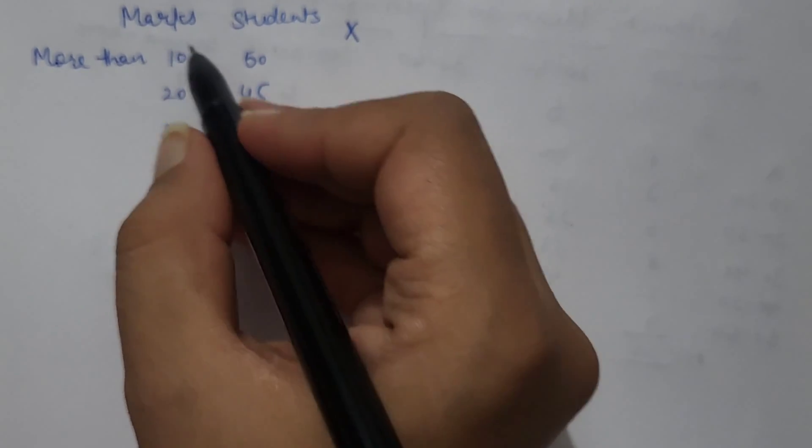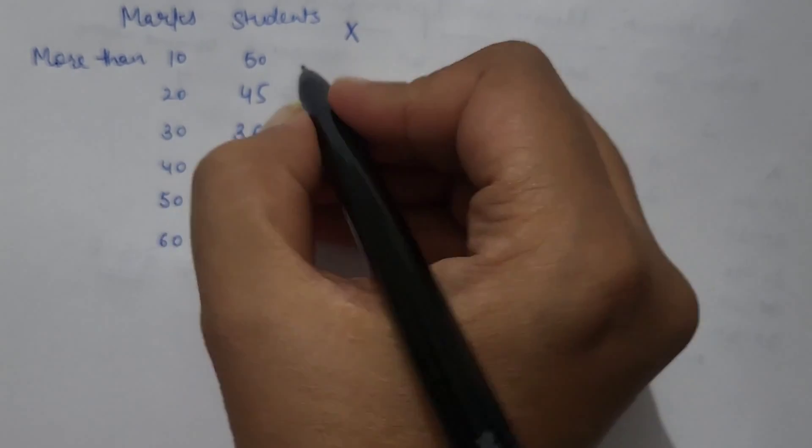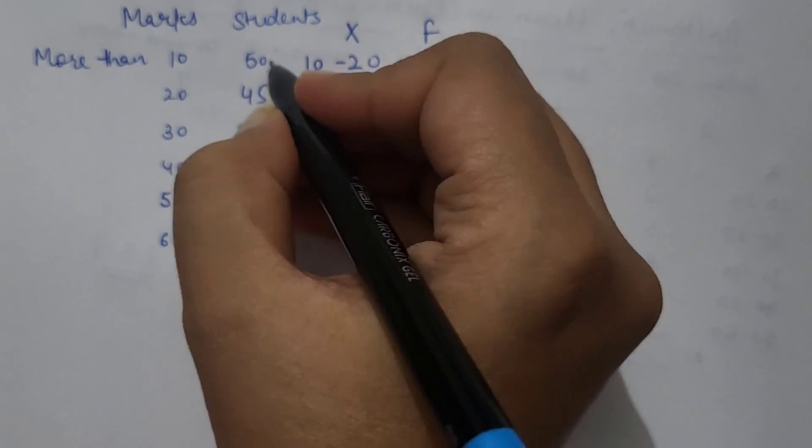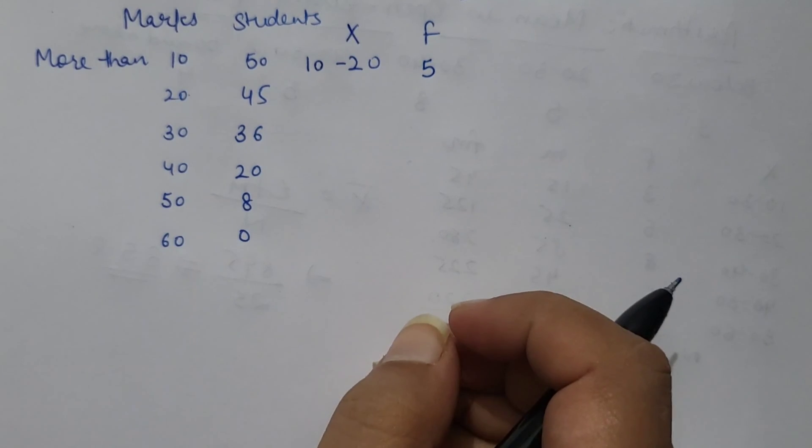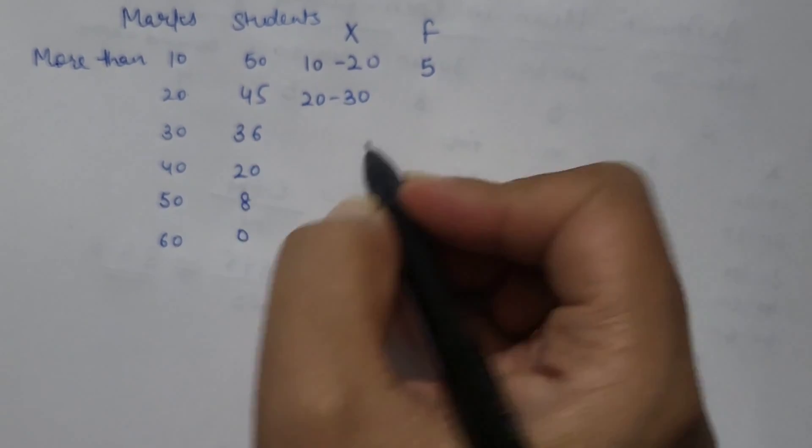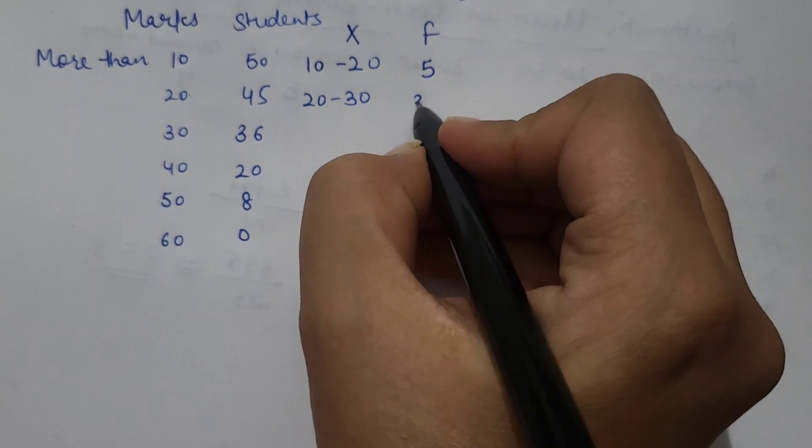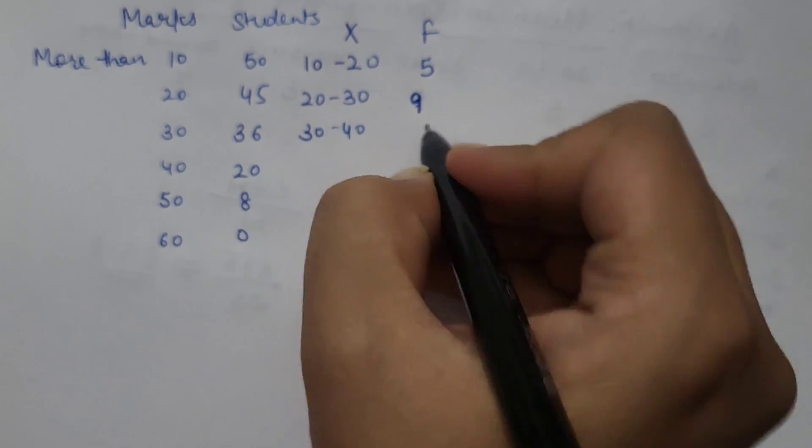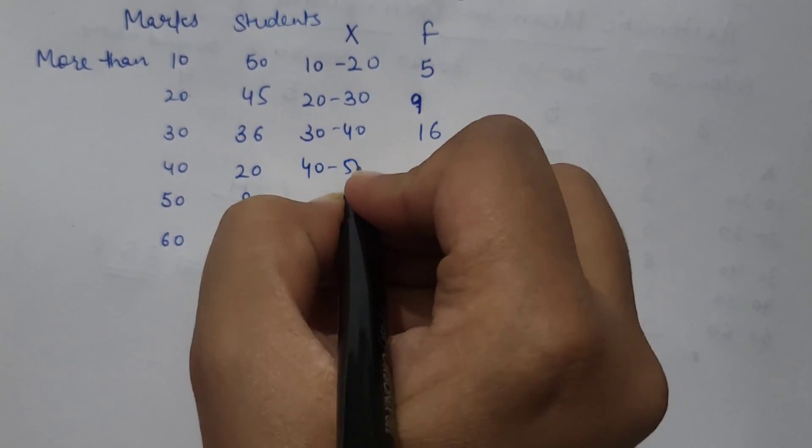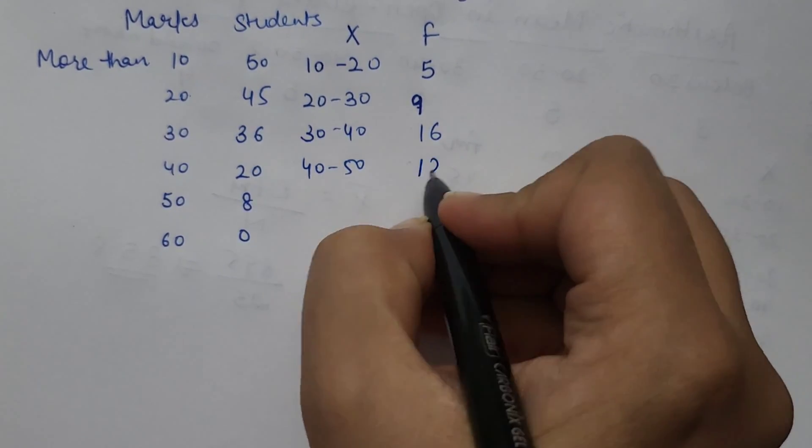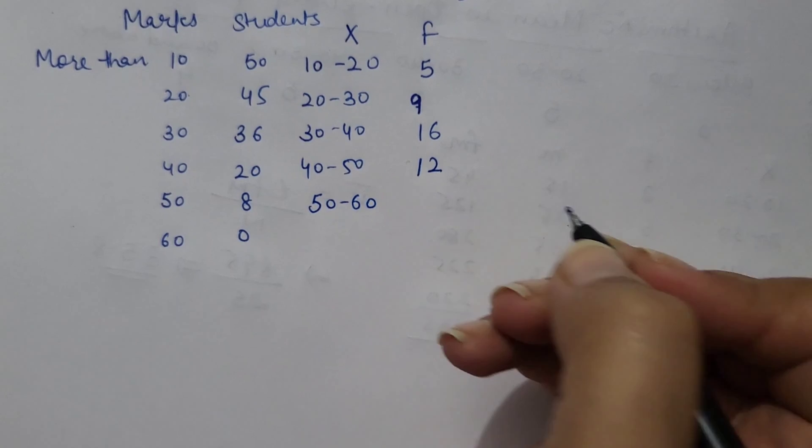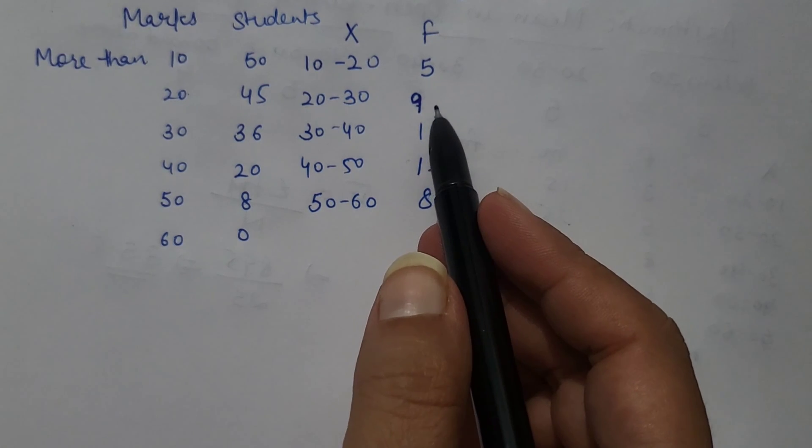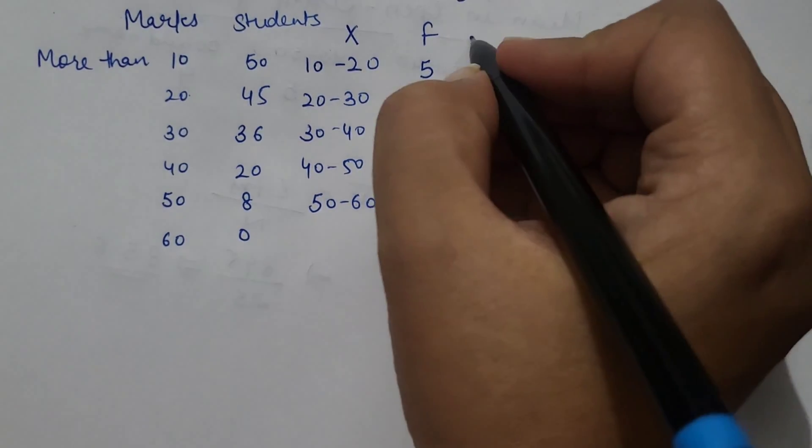Series would be more than 10. 10 se jyada, 5th 20 se jyada. So interval kya banega? 10 to 20. Aur inke beech mein jo frequency hogi, vo iska gap hogi. So next class 20 to 30 and gap would be 45 and 36, that is 9. 30 to 40 is 16, 40 to 50 is 12, 50 to 60 is 8. So that would be our statement and now we can solve it for calculation of arithmetic mean.